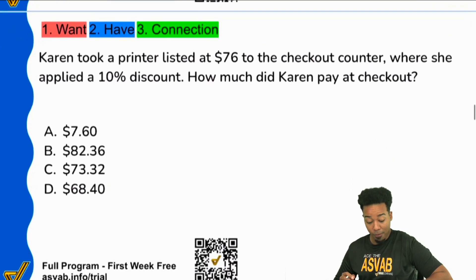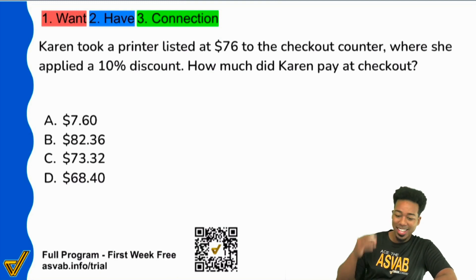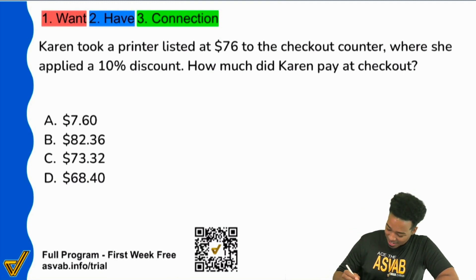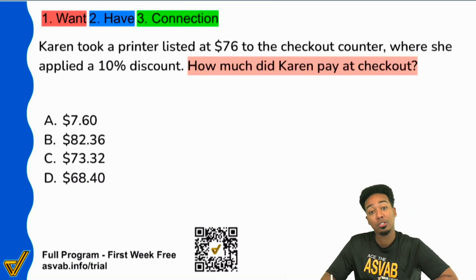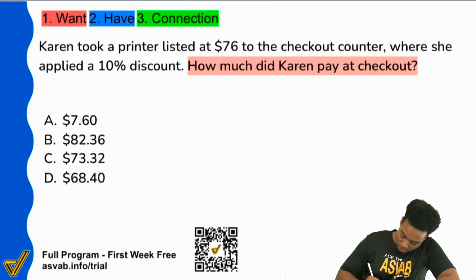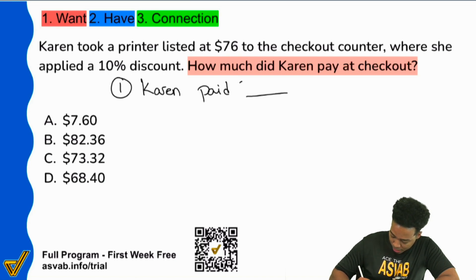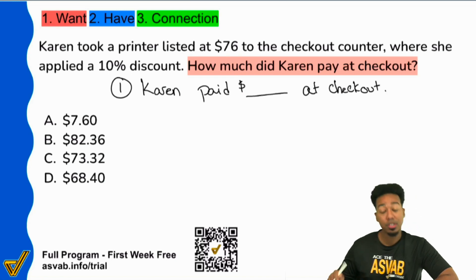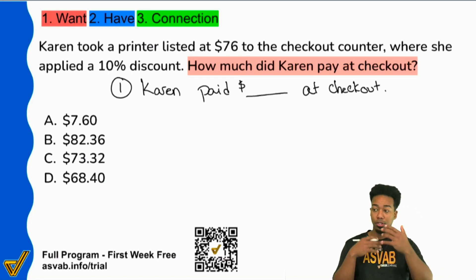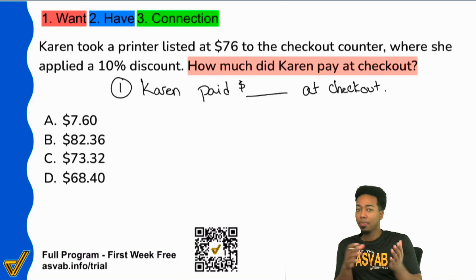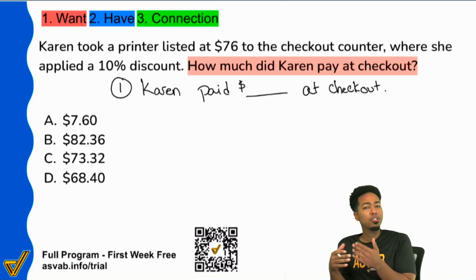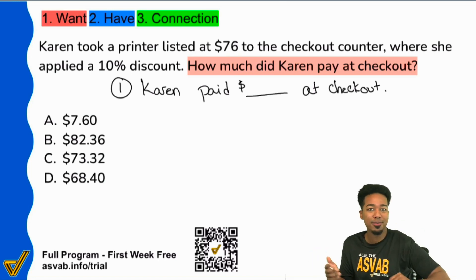Step one — what is it that we want? It says: how much did Karen pay at checkout? So we can just say Karen paid blank dollars at checkout. You don't have to write that out every single time, but if you're still learning word problems the right way, write it down while you practice. Eventually you don't need to write it.